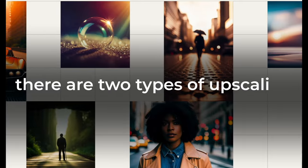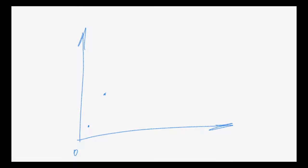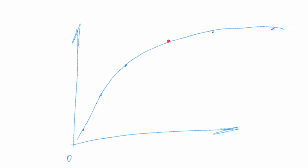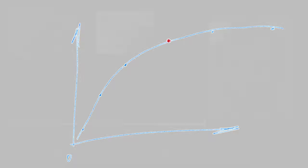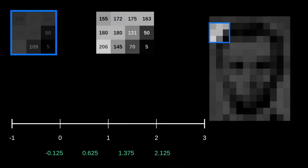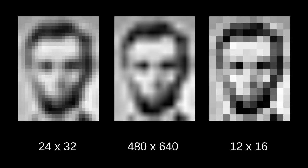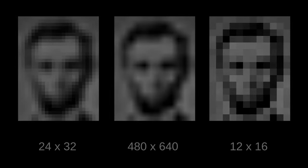There are two types of upscaling. The first one works through mathematical smoothening — it's like looking at a point on a graph and assuming that the missing point is probably somewhere around here. Essentially, the same thing happens with pixels. Algorithms predict what pixels should be based on neighboring pixels. There are many algorithms, and they can be combined to achieve decent results, but only slightly improving the quality, making the image a bit clearer.